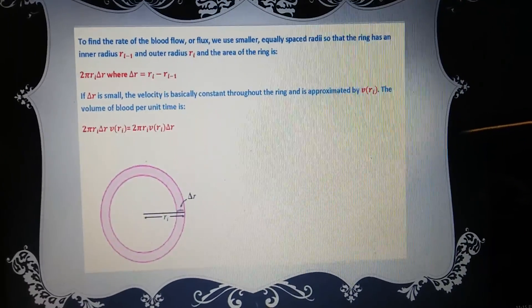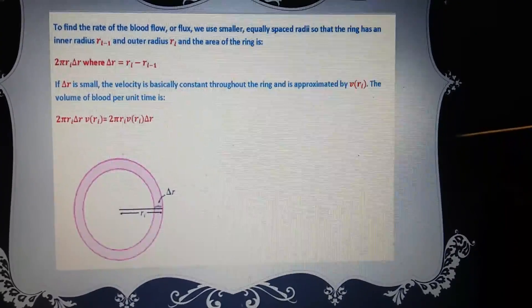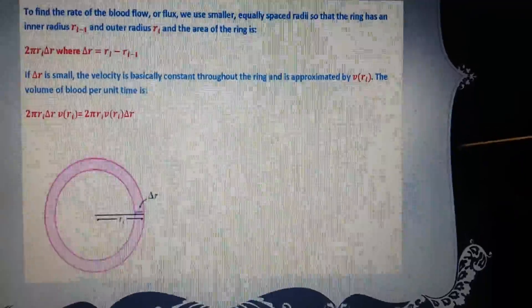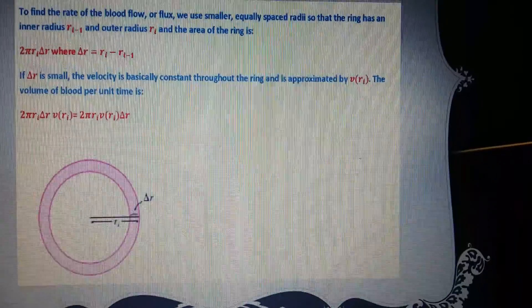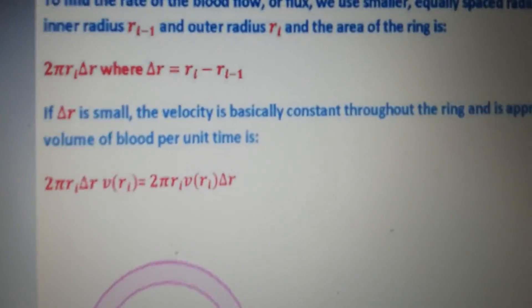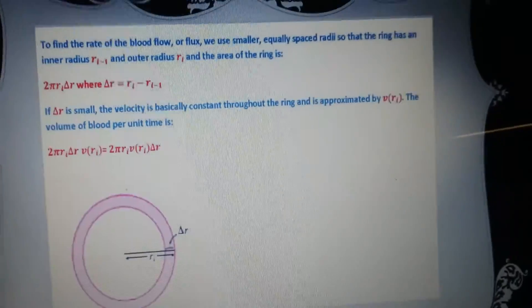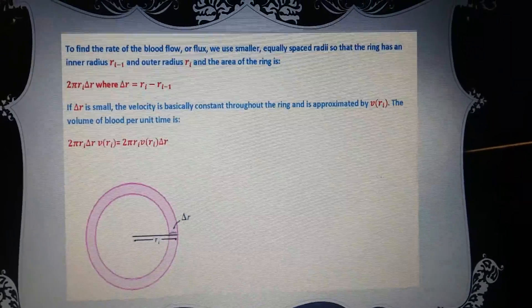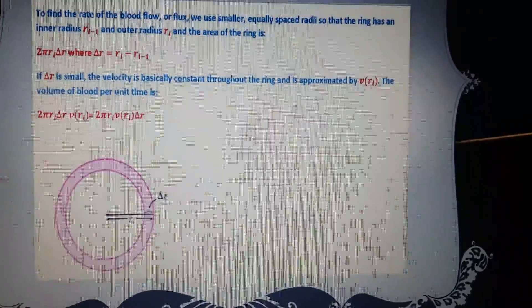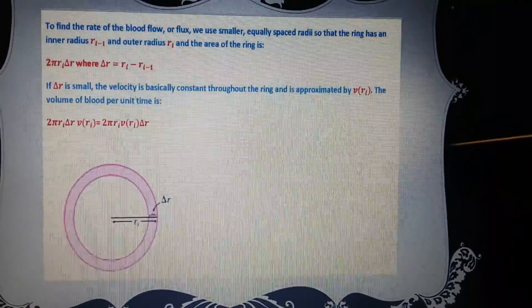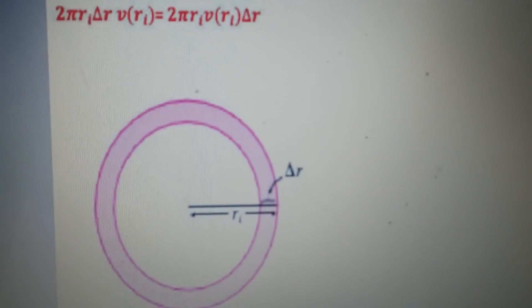To find the rate of blood flow or flux, we use smaller equally spaced radii so that the ring has an inner radius of R_i-1 and the outer radius is R_i, and the area of the ring is this equation that is used for the area of the ring. If the area of the ring is smaller, the velocity is basically constant throughout the ring and is approximated by V(R_i). The volume of blood per unit time is this equation, and this is what it's used.